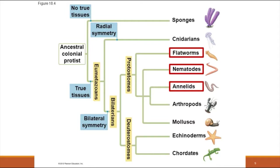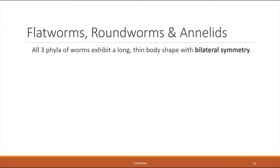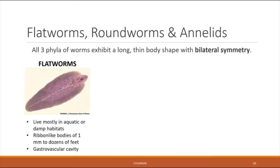Next, we have three different types of worms: flatworms, nematodes, and annelids, and we'll discuss these three phyla together for comparison. Something all three phyla have in common is bilateral symmetry — meaning they are symmetrical down their center line, with their left half identical to their right half — and they all have a long, thin body shape.